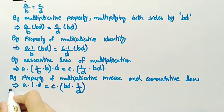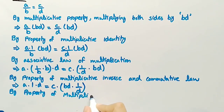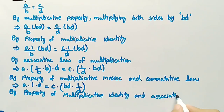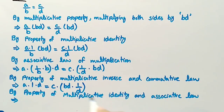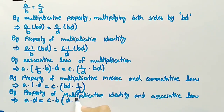Now by using the property of multiplicative identity and associative law, by multiplicative identity a·1 will be equal to a. So we write a·d equal to, and by using associative law, c·b·(d·(1/d)).